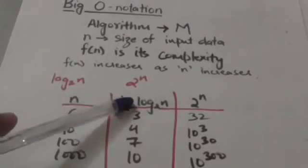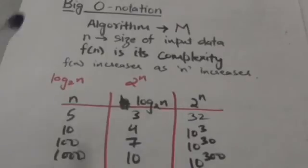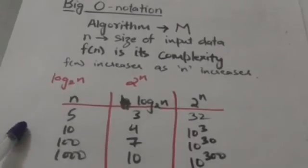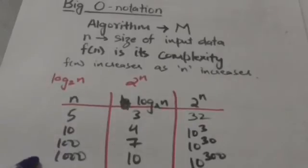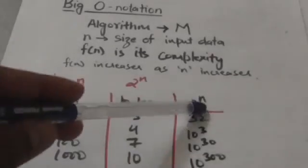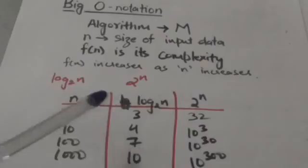These are their approximate values for certain values of n. As the value of n increases, 2 raised to power n grows faster than log base 2 of n. To compare the rate of growth of functions, we use big O notation.